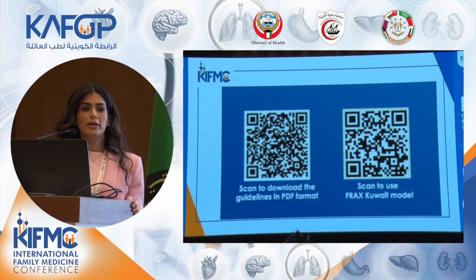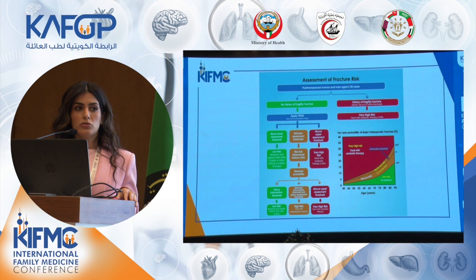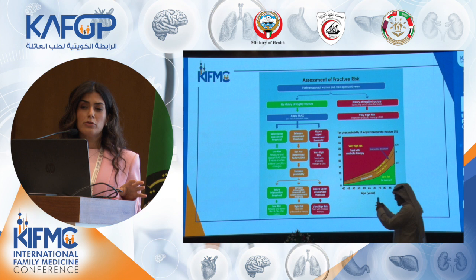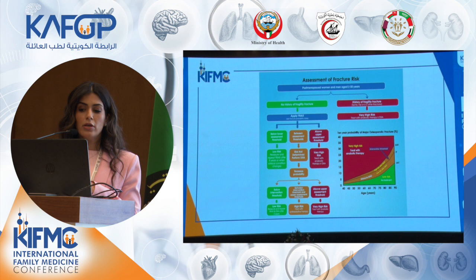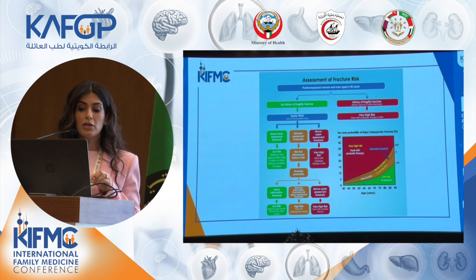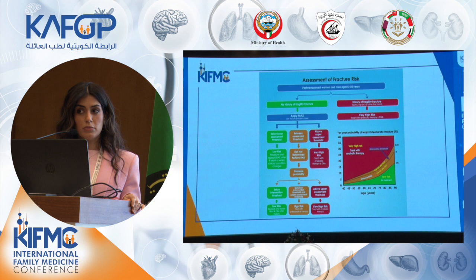The population that should be screened includes post-menopausal women or men age 50 and above. The first question you should ask is whether this patient has had a fragility fracture — whether in the spine, hip, or two or more other fractures in long bones. If yes, classify this patient as very high risk, refer to anabolic treatment in secondary care, and order a DEXA scan as a baseline for monitoring treatment.